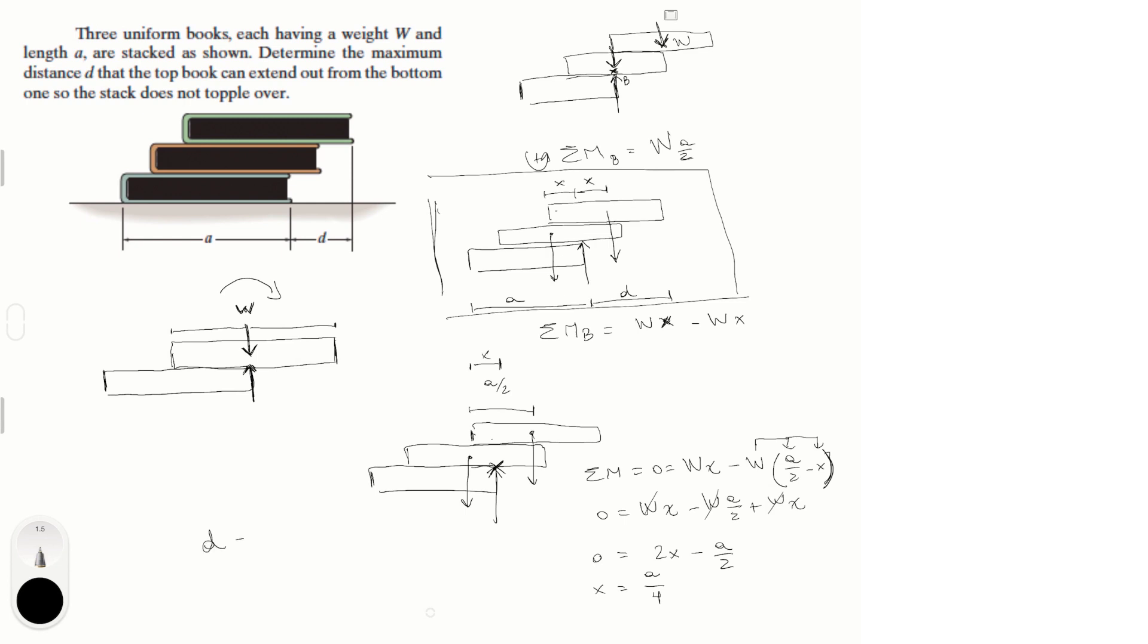You know that D, this distance D right here since I explained on this diagram, is equal to A minus x, which is the distance from here to here. Because A is the length of the book and I said this is x, so the distance D is equal to A minus x. So, D is equal to A and you know that x is equal to A over 4. So, D is equal to 3A over 4. So, final answer.